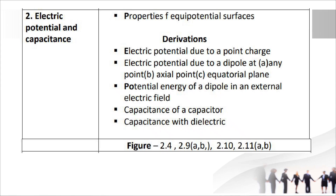Chapter 2: Electrostatic Potential and Capacitance. Important topic is properties of equipotential surfaces. Important derivations: electric potential due to a point charge, electric potential due to a dipole at any point — axial point and equatorial plane — potential energy of a dipole in an external electric field, capacitance of a capacitor, and capacitance with dielectric. Important figures: 2.4, 2.9 AB, 2.10, 2.11 AB.